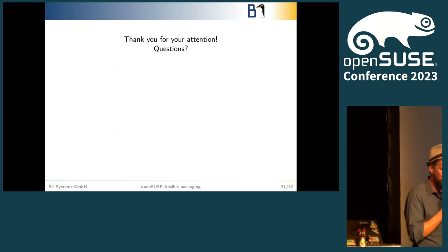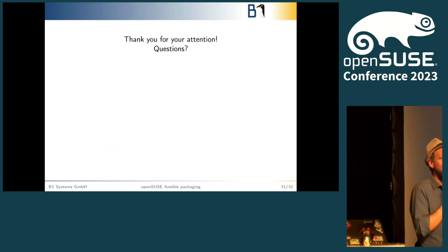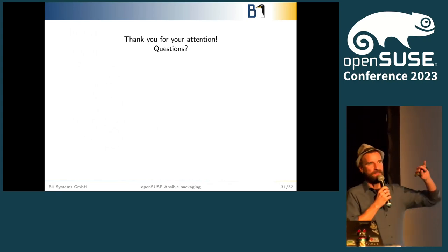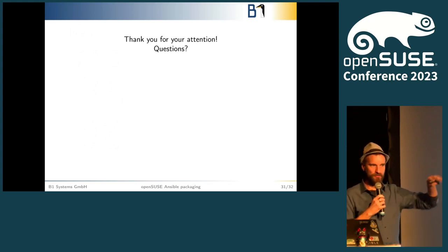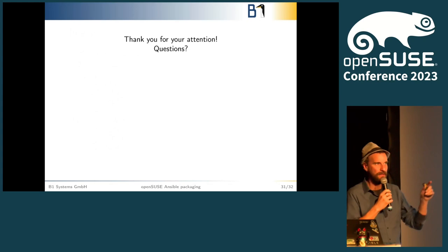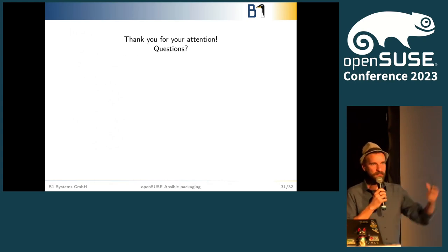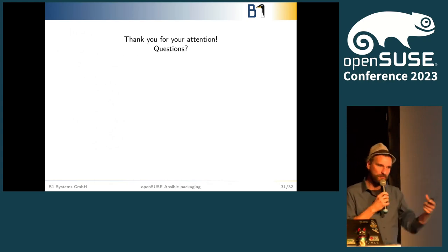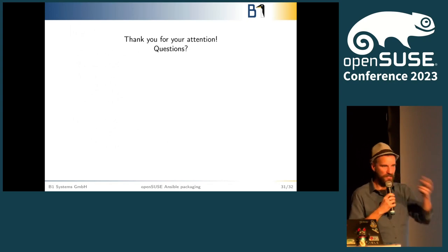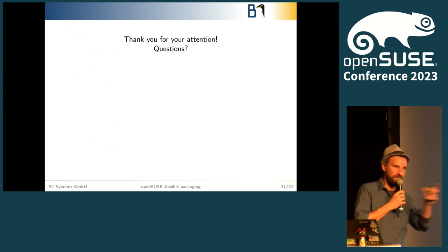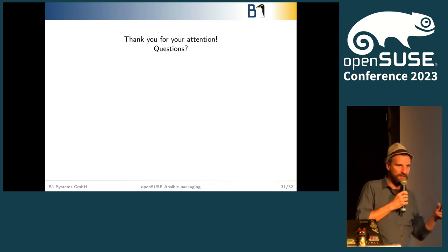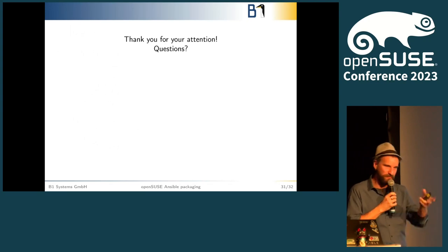Question: Within the Ansible ecosystem, what's the difference between a module and a plugin? Basically, a module is something that does something on the end node — the package module installs a package and uses Python code underneath to detect if it's RPM or Debian. A plugin is something that might help you gather information — for example, an inventory plugin for AWS that just spits out information about all your virtual machines that Ansible can then use. It gets a little tricky because there's not always a clear distinction, but that's the basic idea.